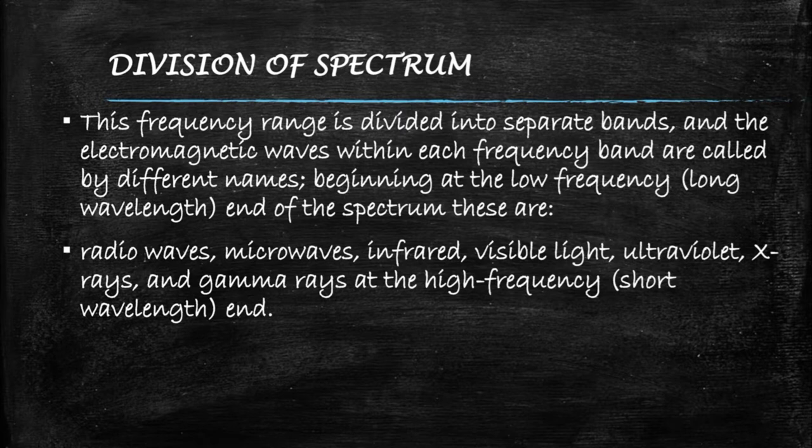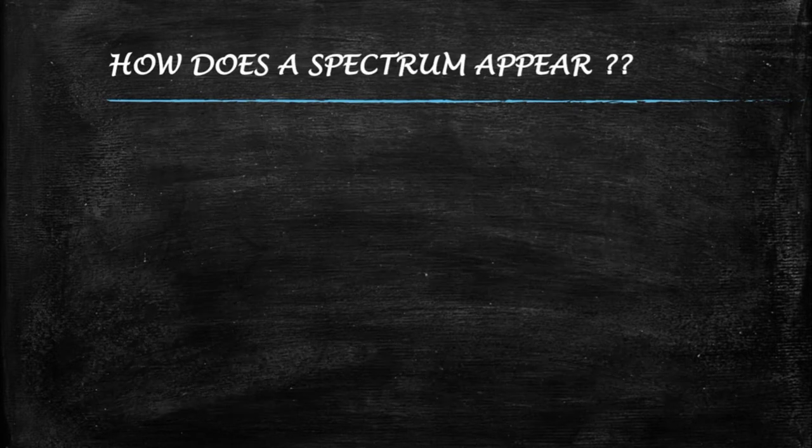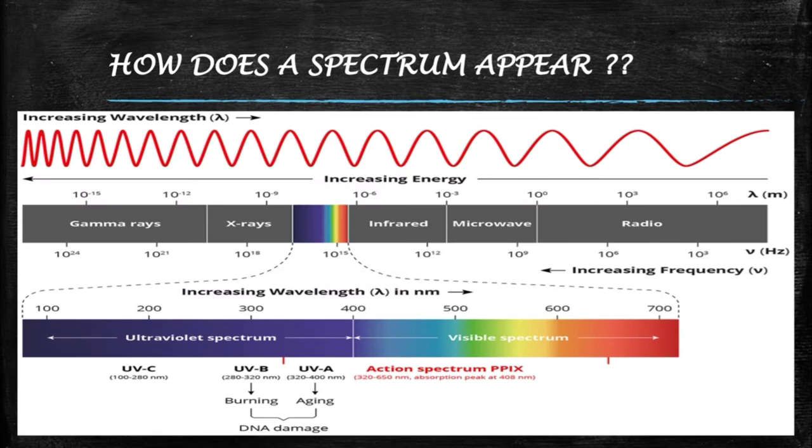Hence, they are divided into radio waves, microwaves, infrared, visible light, ultraviolet, x-rays, and gamma rays at the high frequency end. The electromagnetic waves in each of these bands have different characteristics, such as how they are produced, how they interact with matter, and their practical applications. This is how a spectrum will look like. Observe it carefully so that you can understand the concept much better. Now let's see each wave in detail.